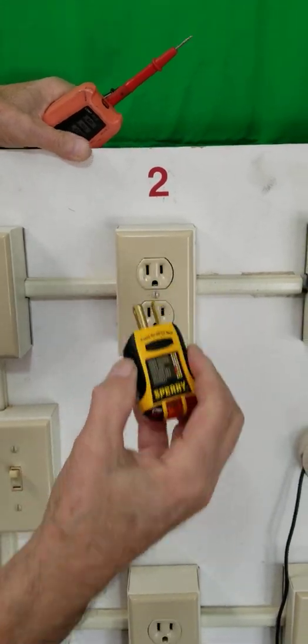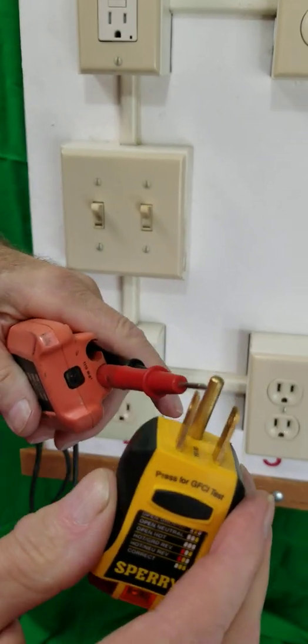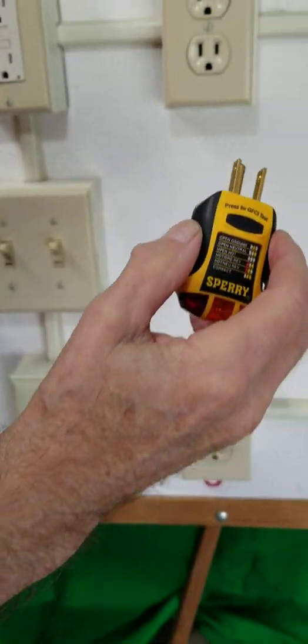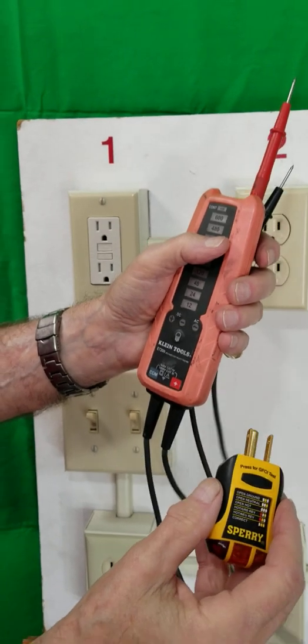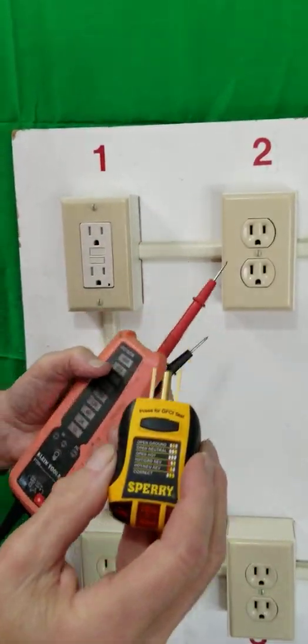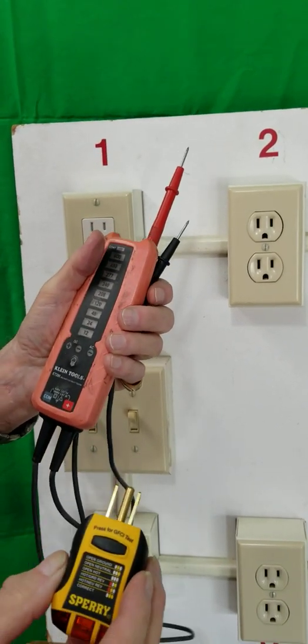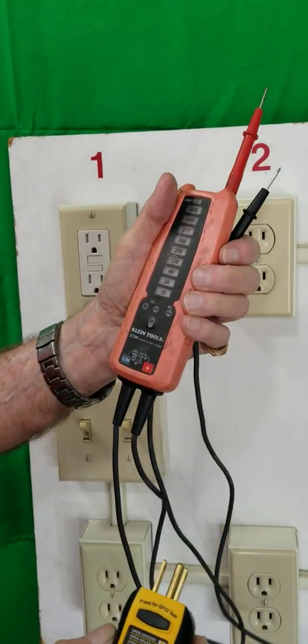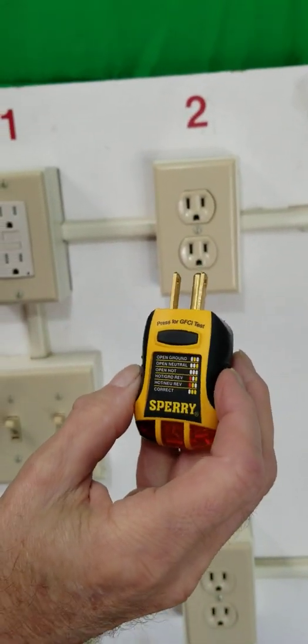Now don't forget, this tester has three prongs: hot leg, neutral, ground. So this tester does the same thing as this tester, except this is very easy to read. But this is really more accurate. But I know most home inspectors don't carry testers like this. You'll have to depend on a tester like this to do all your checking.